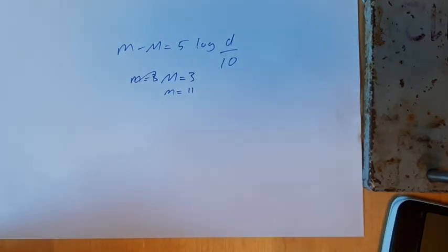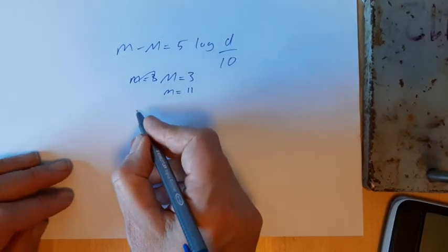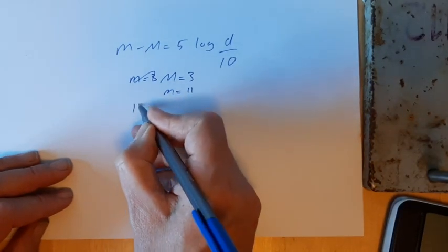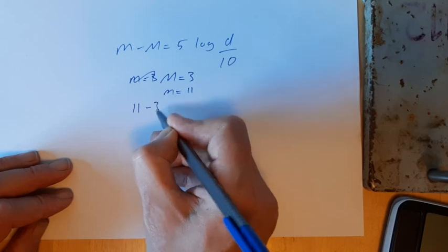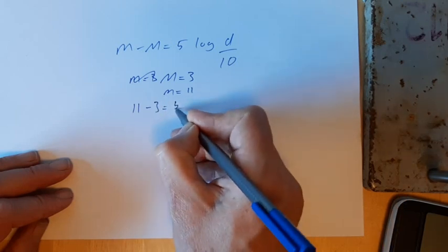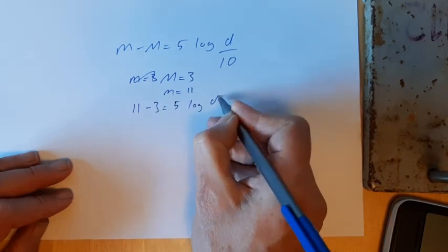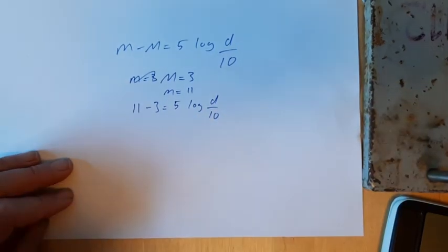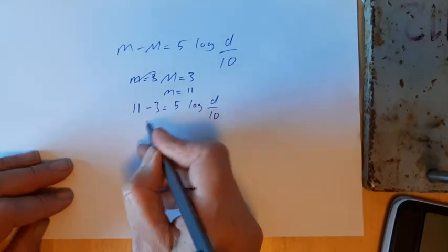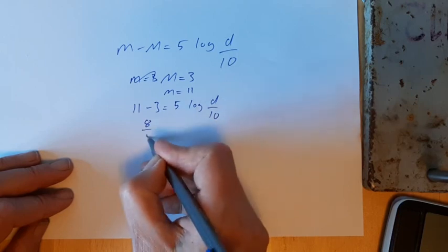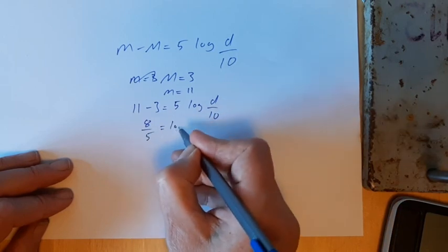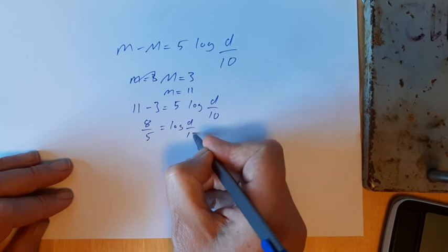So we've got 11 minus 3 equals 5 log d over 10. 11 minus 3 is 8, so moving that over, 8 over 5 equals log d over 10.